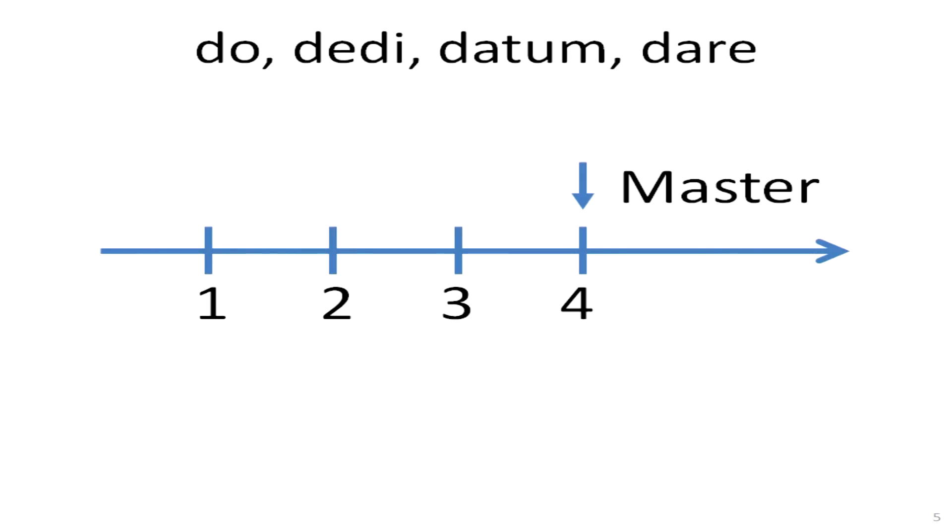For every atomic piece of data, for every incoming change, master assigns an integer number, so that every change can be unambiguously identified. So, we can depict the flow of changes as the number line with the master being at the right side of it, waiting for some new changes to come.